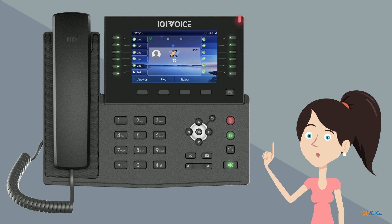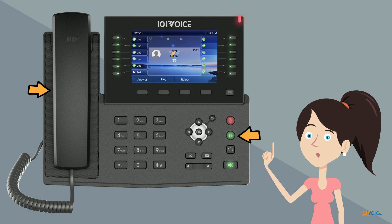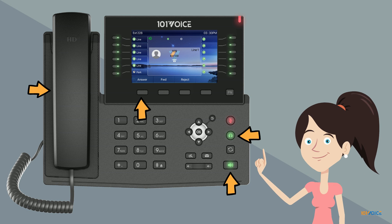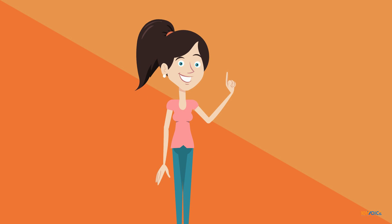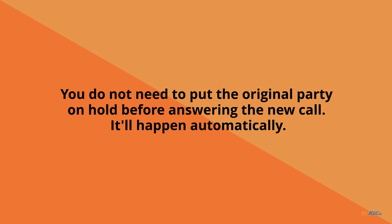To answer an incoming call, either pick up the handset, press the headset key, press the speaker key, or press the answer soft key on the main display. Your phone supports call waiting, and will notify you if you receive an incoming call while you're already on a call. You do not need to put the original party on hold before answering the new call — it'll happen automatically.